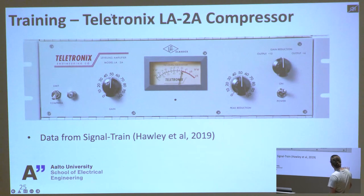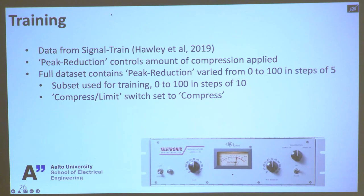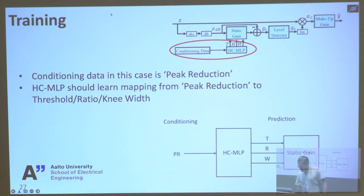To validate this model, we trained a model of this Teletronix LA-2A compressor, which is an optical compressor. We used a dataset that somebody else made, released in 2019 from SignalTrain. It has this peak reduction knob which affects how much compression is applied. In the full dataset, the peak reduction knob has varied from 0 to 100 in steps of 5. We just used a subset, 0 to 100 in steps of 10, leaving out almost half of the dataset for training. The compress-limit switch has been left on compress for the whole model. In this case, we're feeding a single parameter describing the peak reduction to the hyperconditioning MLP, which predicts a gain characteristic for the static gain curve.